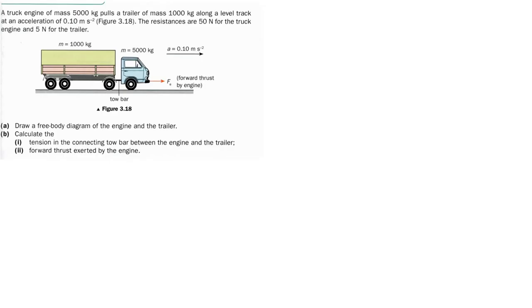Let's see one more example. Read the question: a truck engine of mass 5000 kg pulls a trailer of mass 1000 kg along a level track at constant acceleration. We need to write all the data given — acceleration is 0.1 m/s².